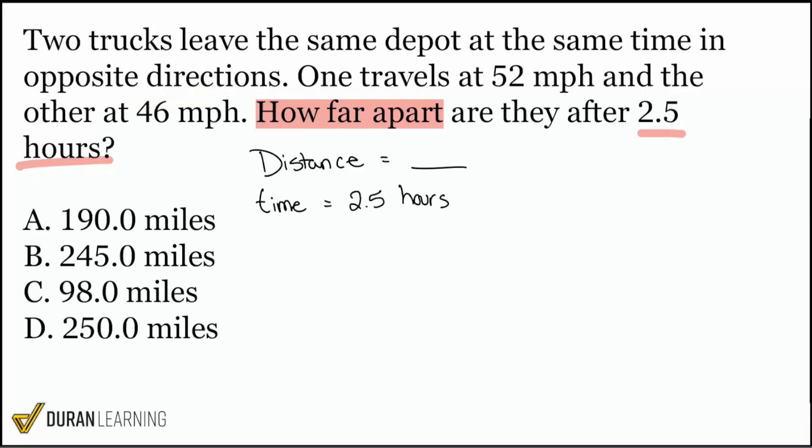Again, we have these two trucks that begin from the same depot. One goes this way and the other goes in the exact opposite direction. Everybody, let's prepare ourselves because if this just so happens to be a distance rate time problem, what can we do typically with the distances or the rates when we have opposite direction movement? What can we do with those distances or rates? Yeah.